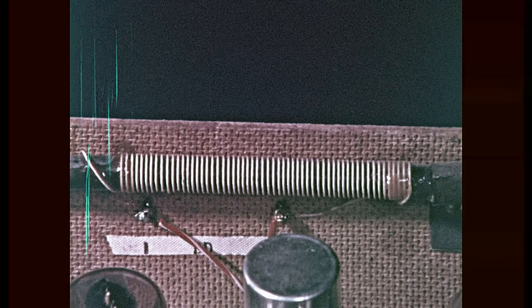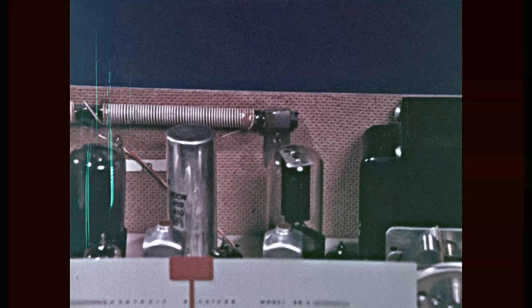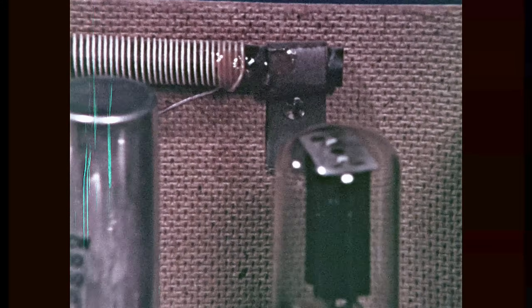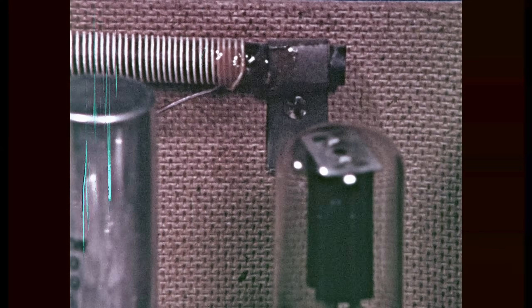Today, many receivers use ferrite loops or loop sticks instead of the loop antenna. They take up very little space. A loop stick is a coil of fine wire wound around a special powdered iron core. It is small and very efficient.